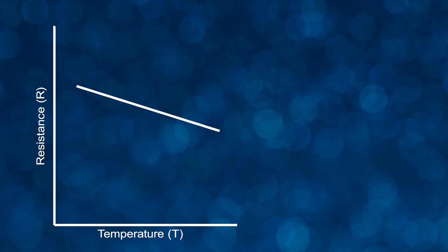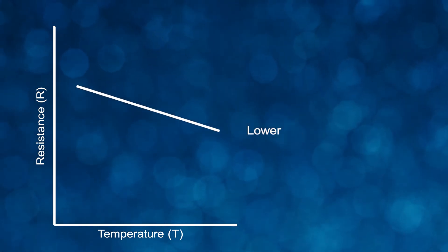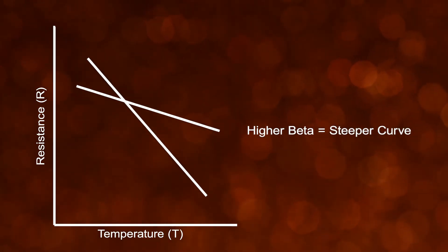A smaller beta value will correspond to a lower sensitivity within the temperature span, while a larger beta value will have a higher sensitivity within the specified temperature differential.